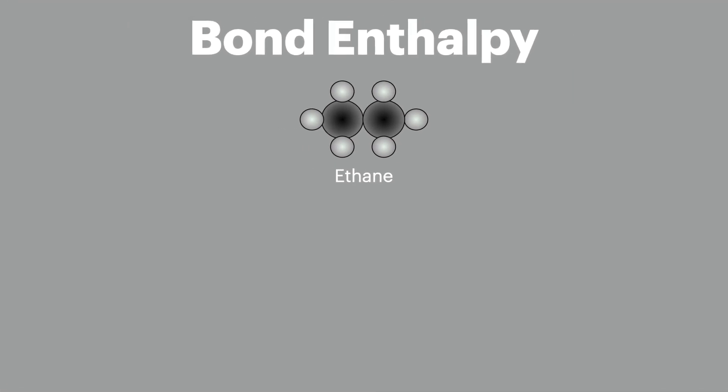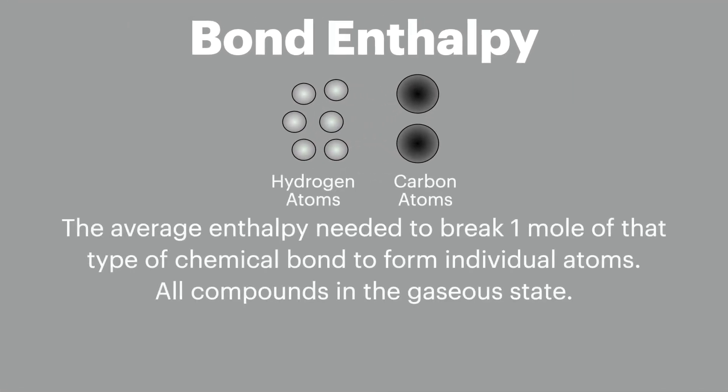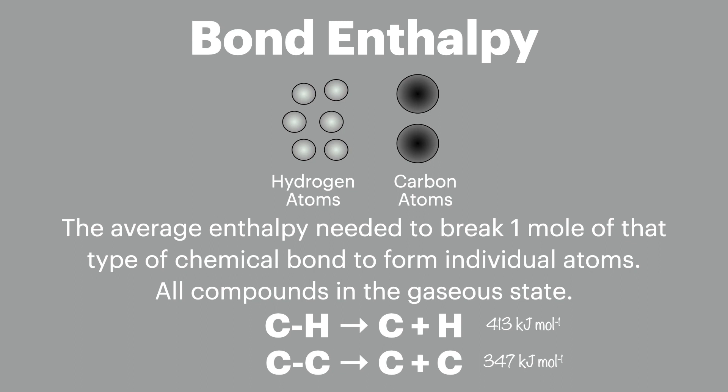Now on to number four: bond enthalpy. This is the average enthalpy needed to break one mole of that type of chemical bond to form individual atoms, with all compounds in their gaseous state. In methane there are two bond types: carbon-hydrogen bonds and carbon-carbon bonds. The definition refers to the average enthalpy for all bonds of that type, because carbon-carbon bonds appear in many different compounds and their position changes how much energy is needed to break them. This is why enthalpy data calculated this way can sometimes differ slightly from data book values.